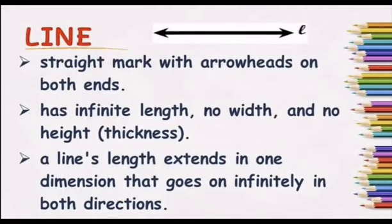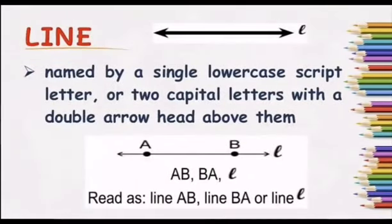The second undefined term is a line. A line is a straight mark with arrowheads on both ends. It has infinite length, no width, and no height or thickness. A line's length extends in one dimension that goes on infinitely in both directions. A line is named by a single lowercase script letter or two capital letters with a double arrowhead above them. The following example is read as line AB, line BA, or line L.